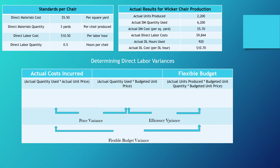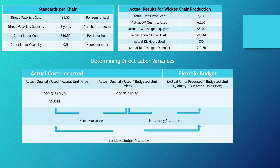Moving on to our other direct cost component — direct labor variance — we'll do the same series of calculations, starting with actual cost incurred for labor: actual quantity used times actual unit price. The actual labor hours used were 920, at an actual average wage rate of $10.70 per hour, which gives us $9,844. For the no-name column, we take 920 hours times the budgeted unit price of $10.50 per hour, which comes to $9,660.